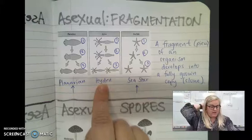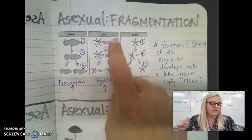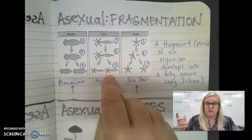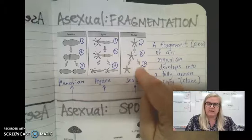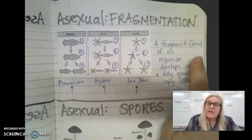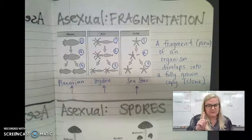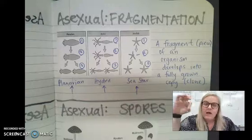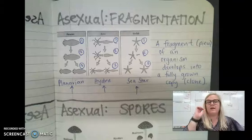Hydra will reproduce on its own through budding, but if you cut a hydra in half it'll just grow new hydra. Depending on how many pieces you cut, you can have more than two hydra. And then our starfish — our Patricks — over here. Fragmentation means a fragment or piece of an organism develops into a fully grown clone of the parent. A fragment becomes the full adult — eventually it's got to grow.